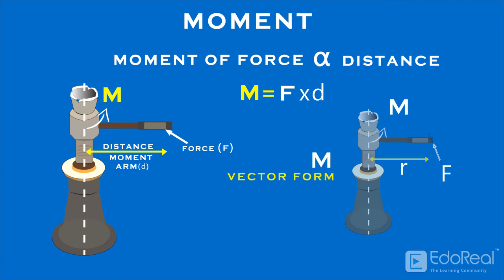In vector form, the moment is defined as the cross product of perpendicular distance from axis to the line of action of force and the applied force.